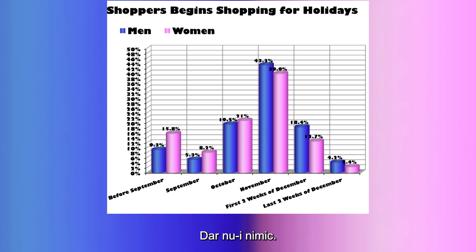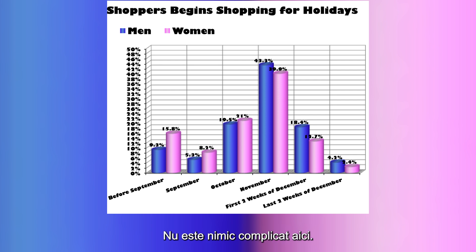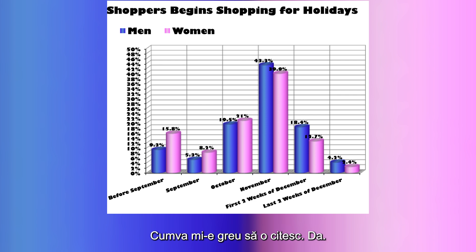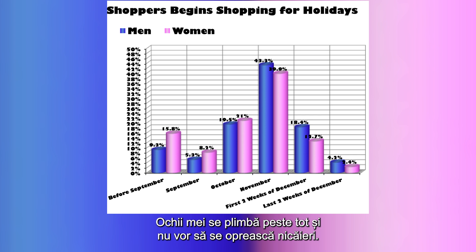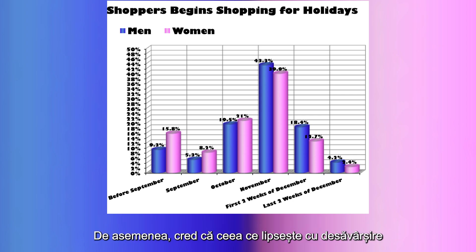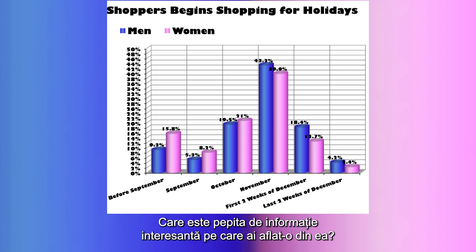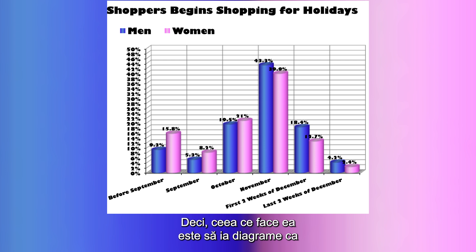The data itself is very simple — we're not talking about quantum mechanics — but I find it hard to read. My eyes go all over the place and don't settle anywhere. What's really missing is a clear main story: what is the nugget of interesting information you found? What she does is take charts like this and declutter them, bringing them to a simpler, clearer presentation.